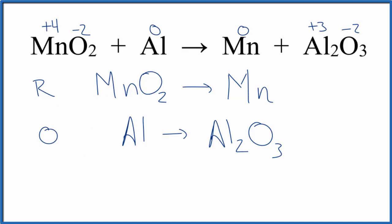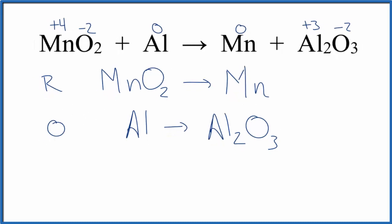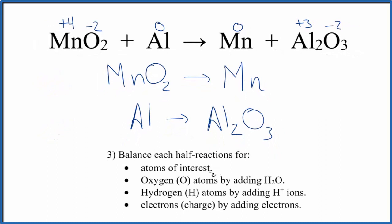Now we can follow these steps to balance these half-reactions. We'll start by balancing the atoms of interest, the ones that have changed. Manganese and manganese, that's balanced. We have one aluminum here and two here. Let's put a two in front of the aluminum. So the atoms are balanced.